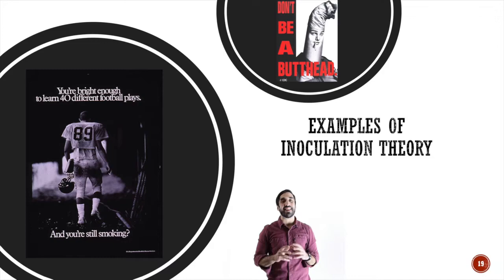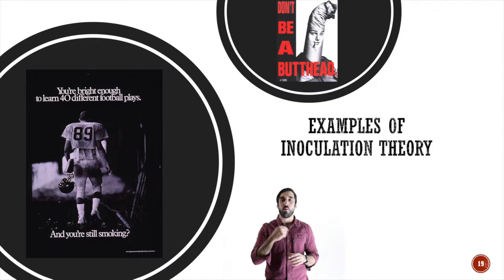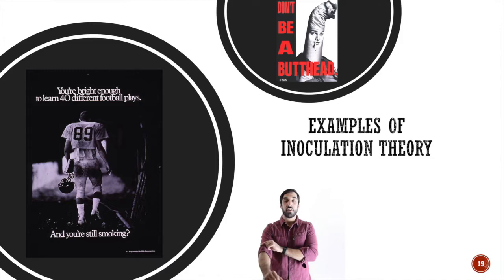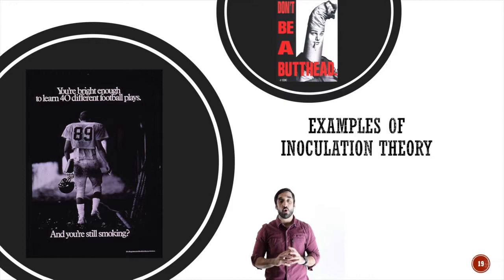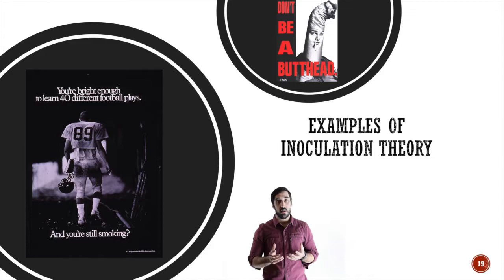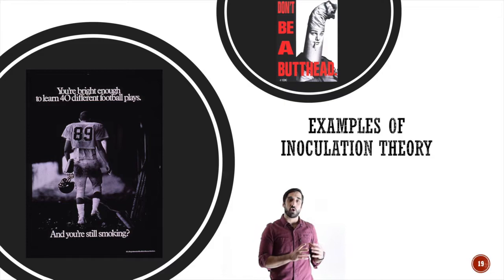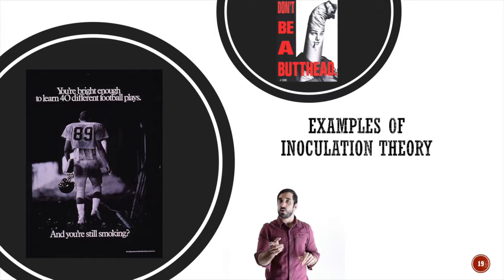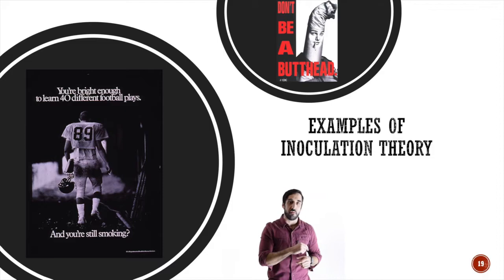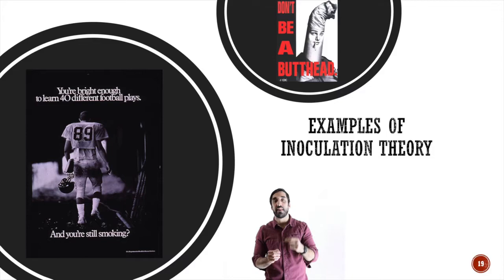Both examples also indicate some characteristics we described in social norming campaigns — they identify behaviors that are acceptable and those that aren't, then try to inoculate individuals into choosing the right decision: to avoid cigarette smoking. The example on the left says, 'You're bright enough to learn 40 different football plays, and yet you're still smoking?' This is a targeted message that assumes intelligence and suggests smokers are making a bad decision. For non-smokers, it inoculates them against future smoking by confirming their choice not to smoke was smart, reducing their dissonance.